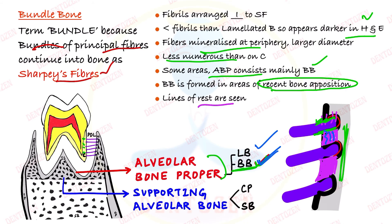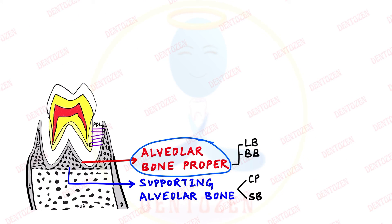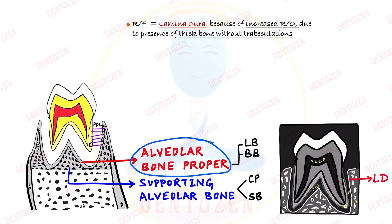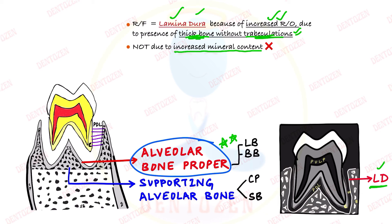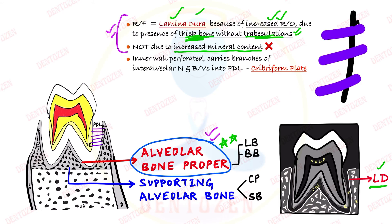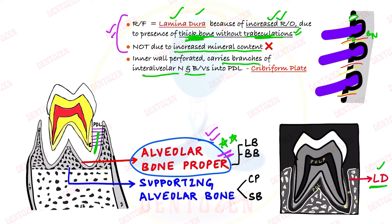In the radiograph, alveolar bone proper is given the special term lamina dura — lamina means layer, dura means thick. It appears as a thick white line due to increased radiopacity because of the thick bone without any trabeculation. Importantly, the mineral content of this bone is not increased; it is similar to other bones — the radiopacity is due to the thickness of the bone. This is a very important viva question: what is the radiographic appearance of alveolar bone proper and why.